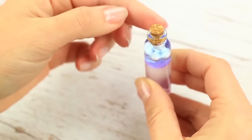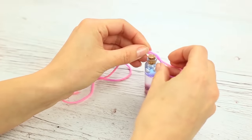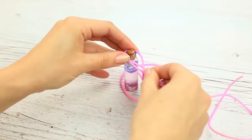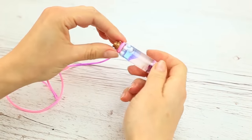Take a pink cord, fold it in half. Tie it around the neck. The first unusual bottle necklace is ready.